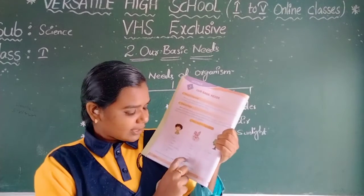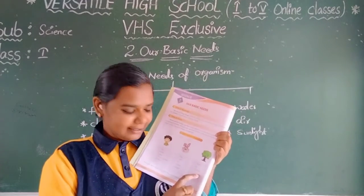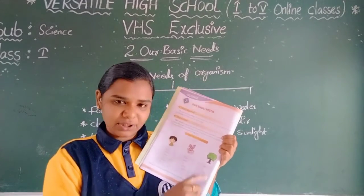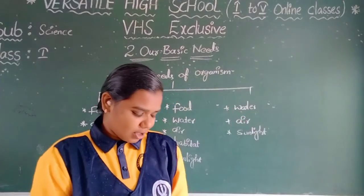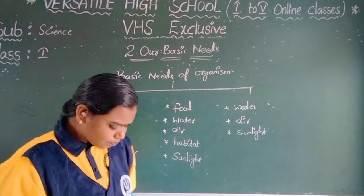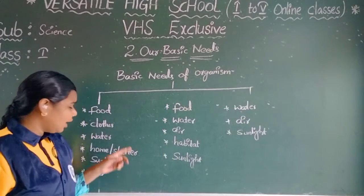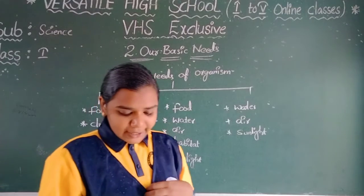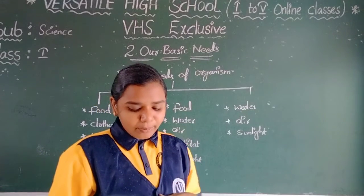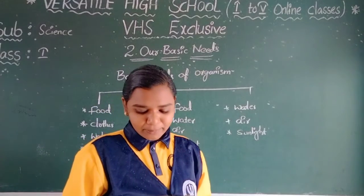Next, for plants: water, air, and sunlight. Now let's learn about the basic needs of human beings.